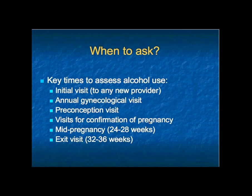When should screening be done? For universal screening to take place, it must be asked of every woman of childbearing age at every visit: new patients, every annual gynecological visit, during the preconception visit, and during pregnancy at every single visit—to confirm pregnancy, during the second trimester, and last trimester—so we can track any change in drinking behavior.